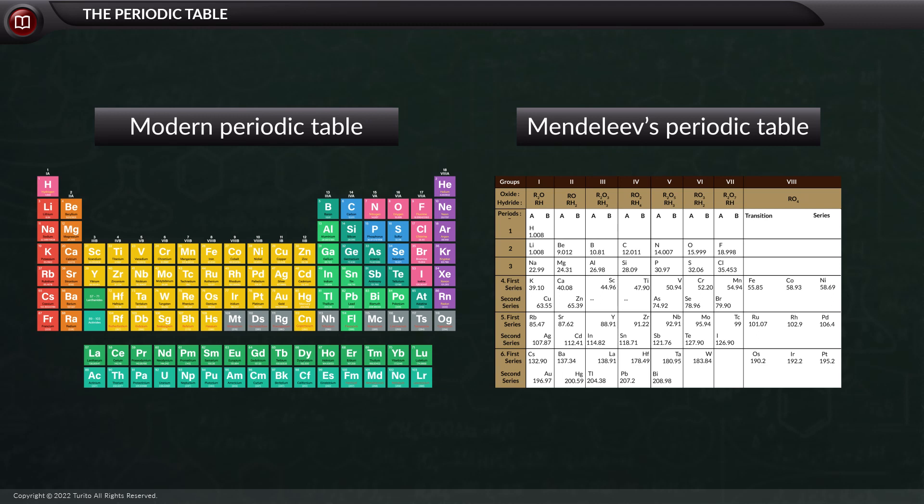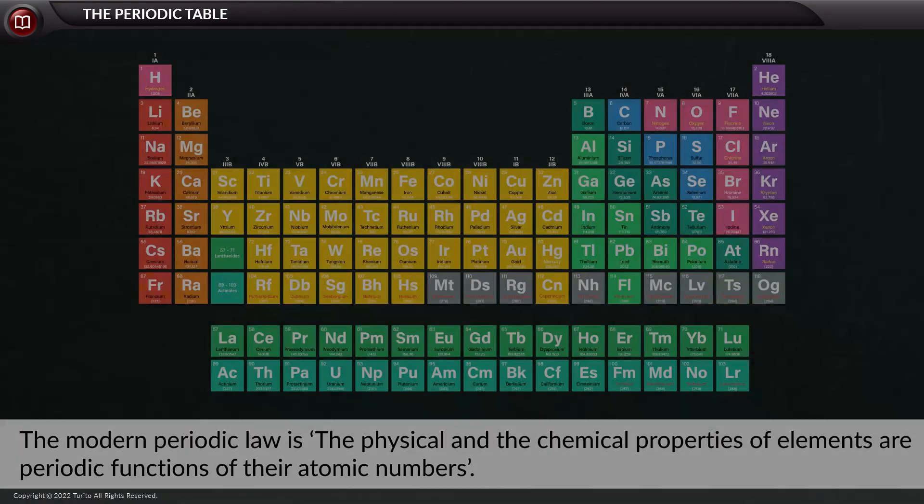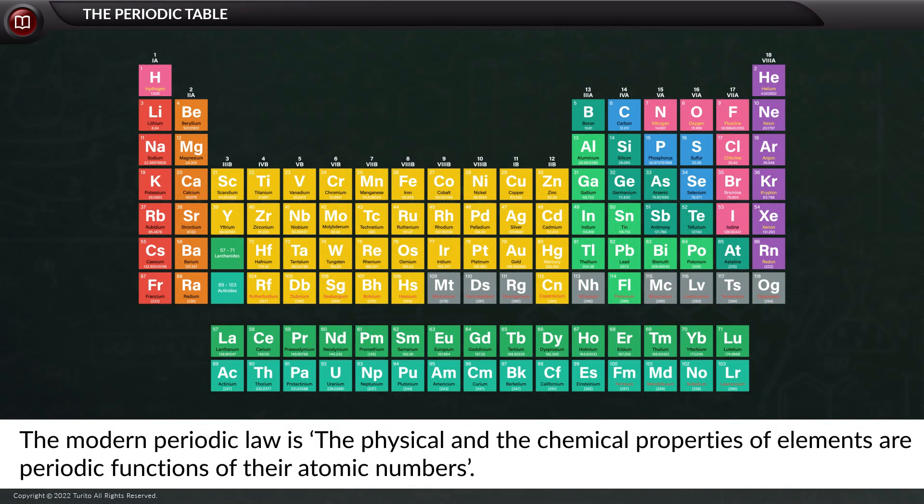What is the modern periodic law? The modern periodic law is: the physical and the chemical properties of elements are periodic functions of their atomic numbers.